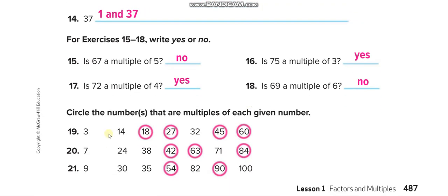From these numbers you have to circle the multiples. For multiples of 3: 14 is no, 18 yes, 27 yes, 32 no (because 3 times 10 is 30 and 3 times 11 is 33), 45 yes, 60 yes. Similarly, 24 is not a multiple of 7, 38 no, 42 yes. You have to find out the multiples of the given numbers.